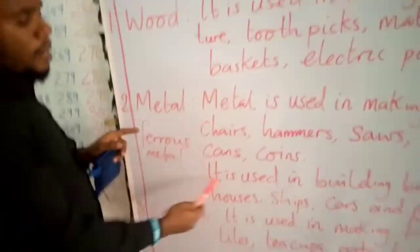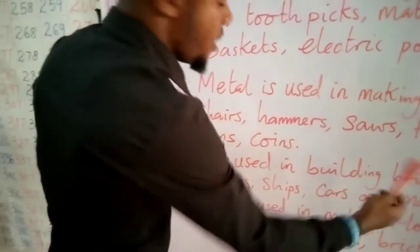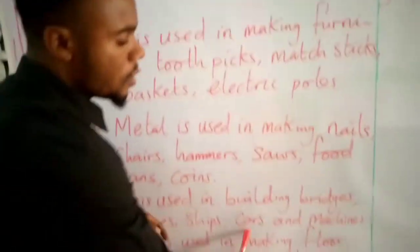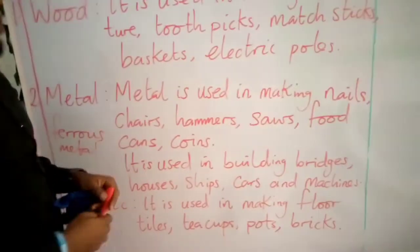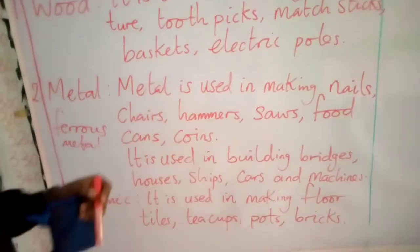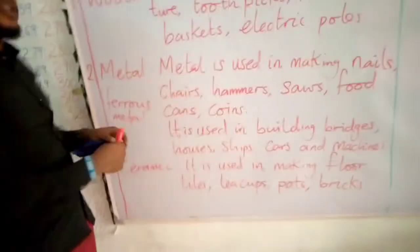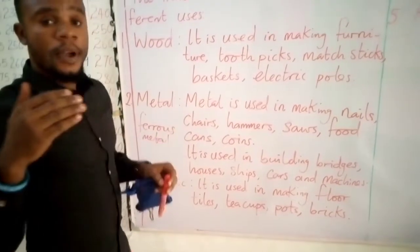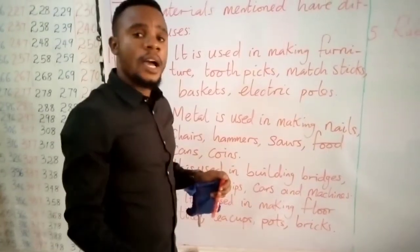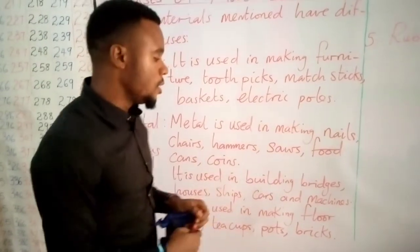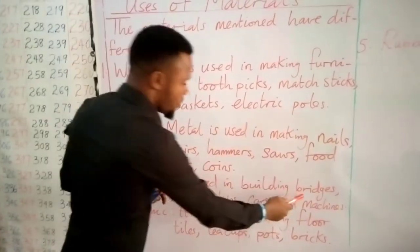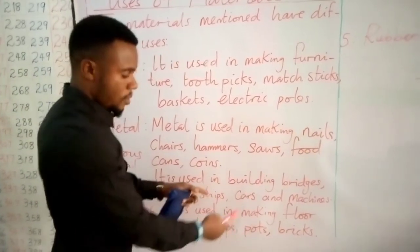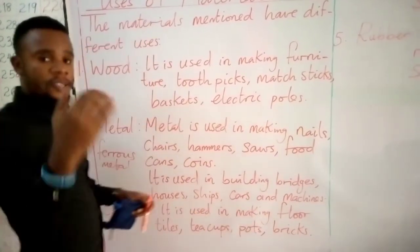Metals can also be used in building bridges, houses, ships, cars and machines. We use ferrous metals — like iron rods, which come in different sizes — to construct bridges, houses, ships, cars and machines.